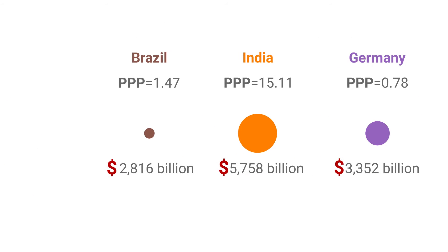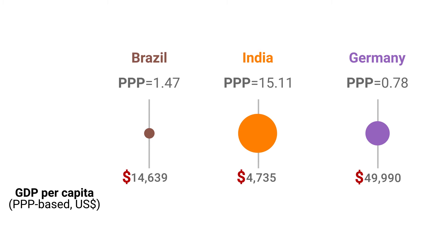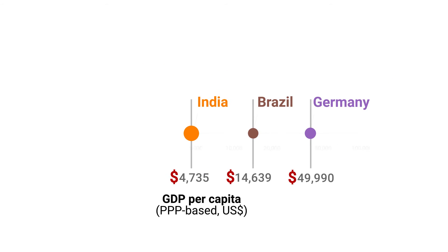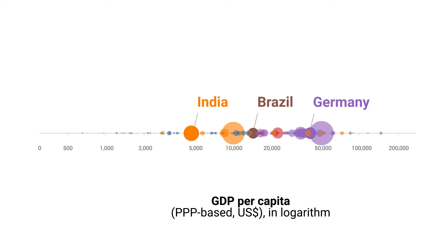Let's add Brazil. To compare standards of living across different economies, let's align them by GDP per capita, which is GDP divided by population. The horizontal axis expresses GDP per capita in PPP terms, with the lowest GDP per capita on the left and the highest on the right. Adding the remaining economies, the sizes of the bubbles and their location on the horizontal line show the relationship between GDP and GDP per capita, both in PPP terms, of the world's economies.